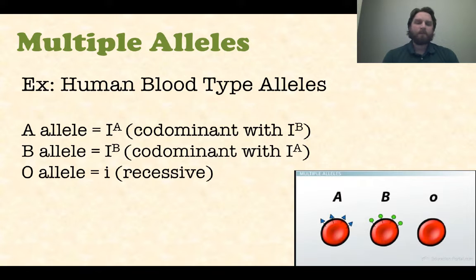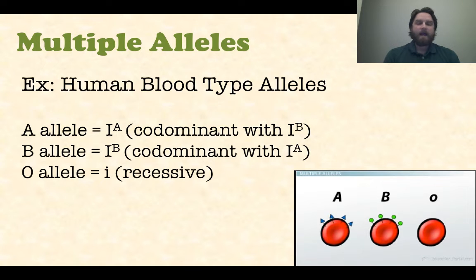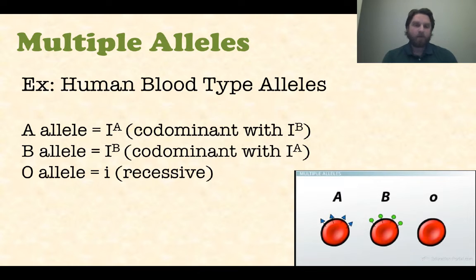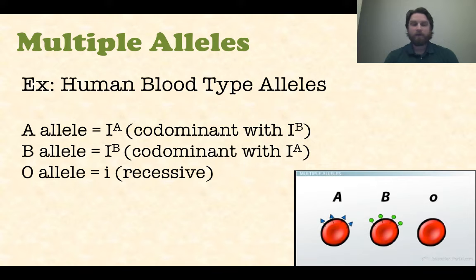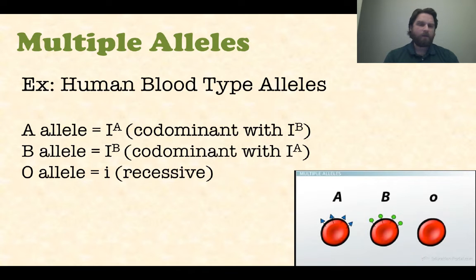Another great example of multiple alleles is human blood type. There are three different alleles that control blood type. Two of these alleles — Ia and Ib — are co-dominant, but both are dominant over the recessive O allele. That's why we have blood types A, AB, B, and O. You can have one A allele and one B allele — they are co-dominant, both get expressed, and you get AB blood type. The only way to get type O is two copies of the recessive allele. There are four phenotypes but multiple genotypes possible.